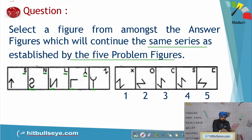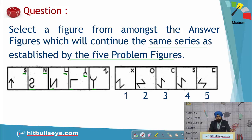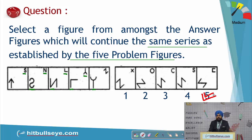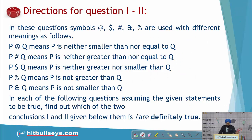We try to take the water image of this letter, so the water image has to start from here only. The first option contains exactly the same letter, which cannot be the answer. In the second, third, and fourth options, the position of the bottom-most line is supposed to be a certain way but is shown differently, so those get rejected. Your answer for this question becomes the fifth option.